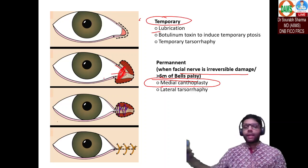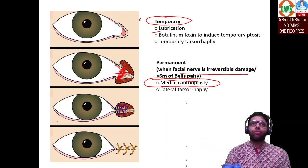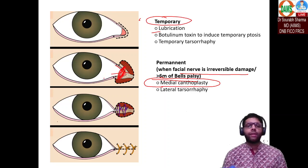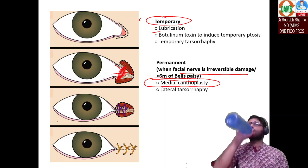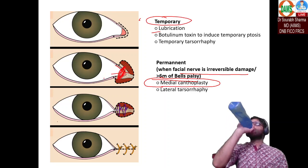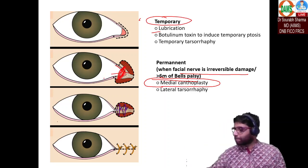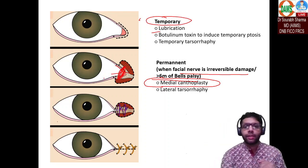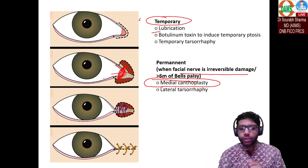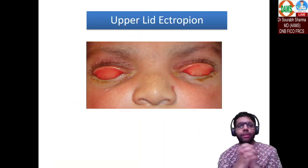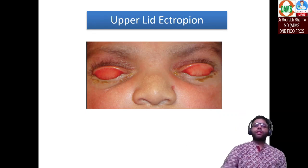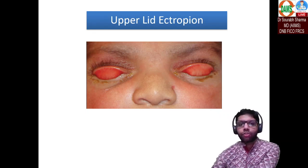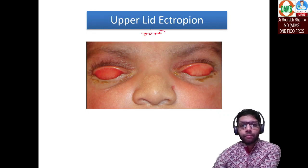Mechanical ectropion is managed by removing the underlying cause — when there is a mass, you take it out and reconstruct the eyelid. Upper lid ectropion is a very rare condition.